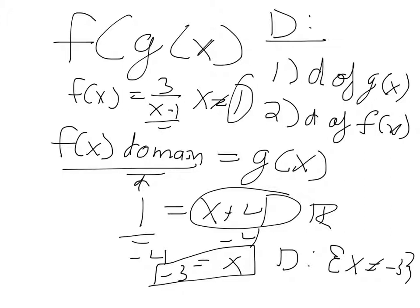Why do you set the f of x domain equal to g of x? Because you're not working with f of x alone — you're working with f of g of x. The x value gets transformed when plugged into g of x before it affects f of x. So when we say f of x cannot equal 1, we're really asking: what values of g of x give you 1? That's why we set 1 equal to g of x. When x equals negative 3, plugging negative 3 into g of x gives 1, meaning we'd get f of 1 — which doesn't work because 1 is outside the domain.